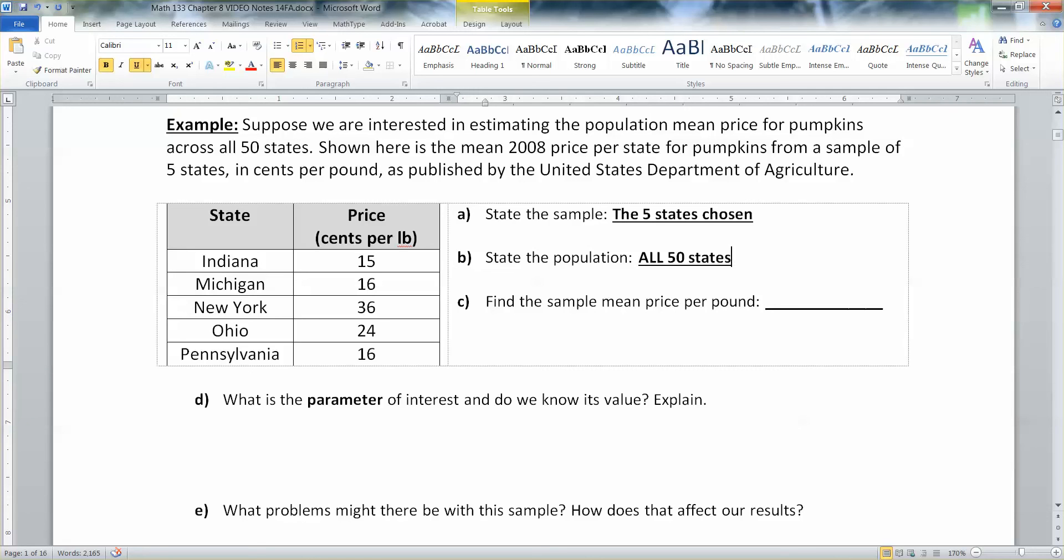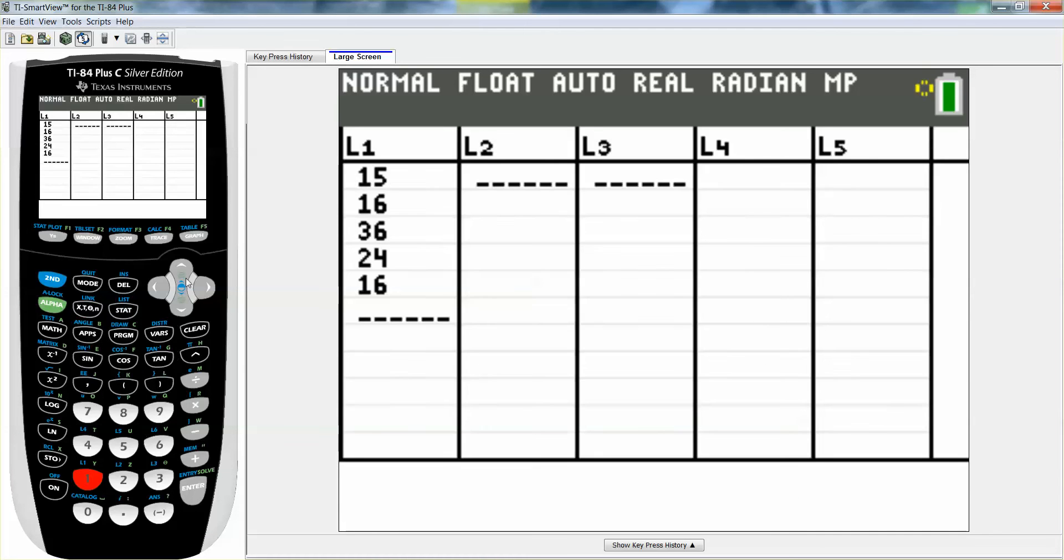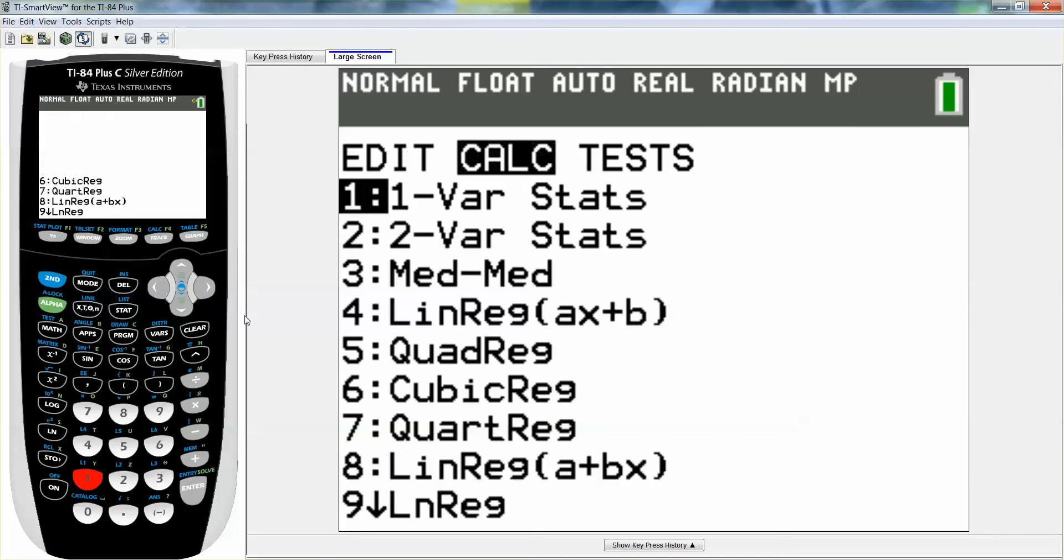So now I want to find the sample mean price per pound. Well, we've done this since chapter three. So you go to stats, you go to edit, you clear out the old, but I actually already did this and typed in my new numbers. So there they are. Then I go to stat, calculate, one variable.